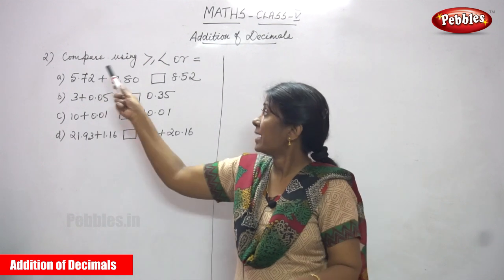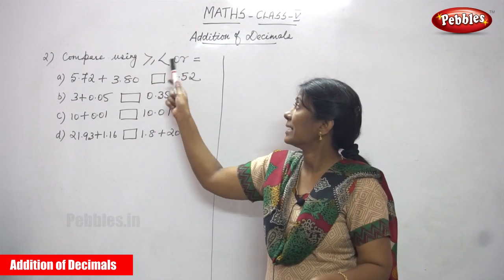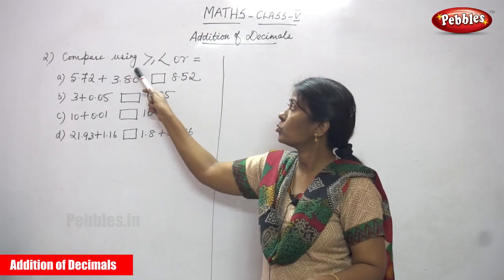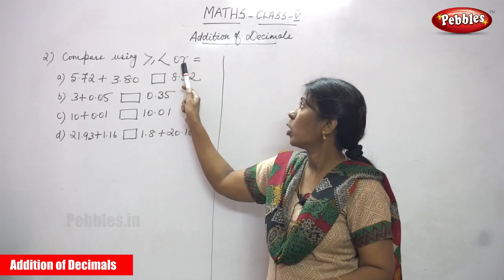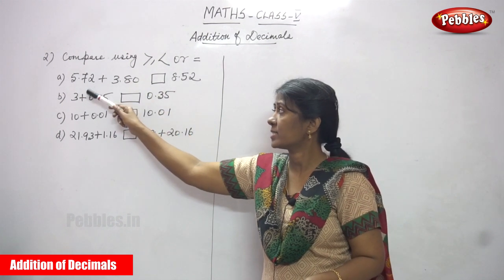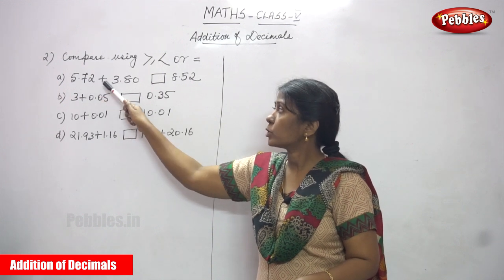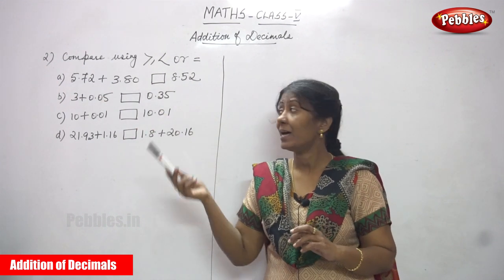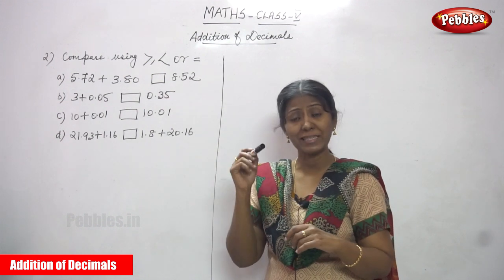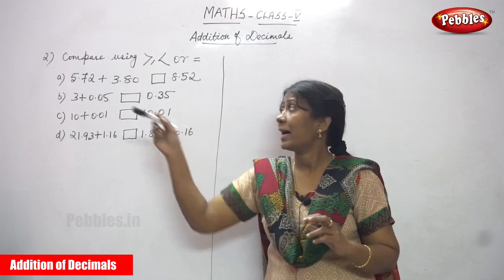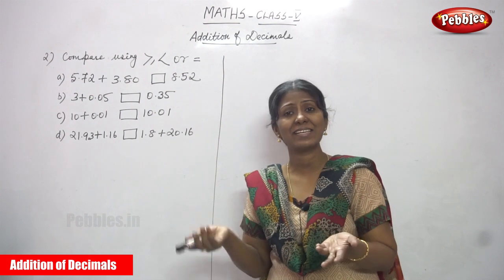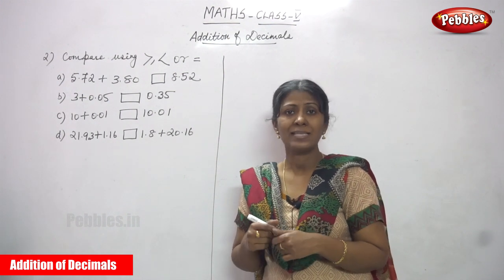Now we are going to compare using greater than, less than, and equal to. This is a greater sign, this is a lesser sign, and this is equal. First you have to add the given numbers, write the answer in the box, then compare with the given total whether it is greater than, lesser than, or equal.